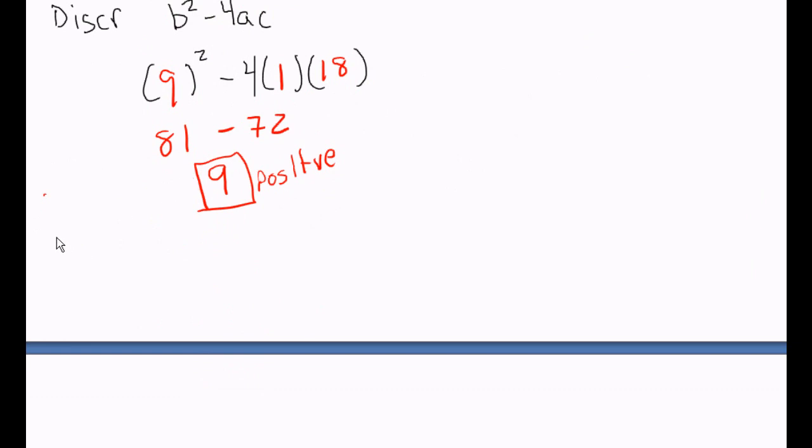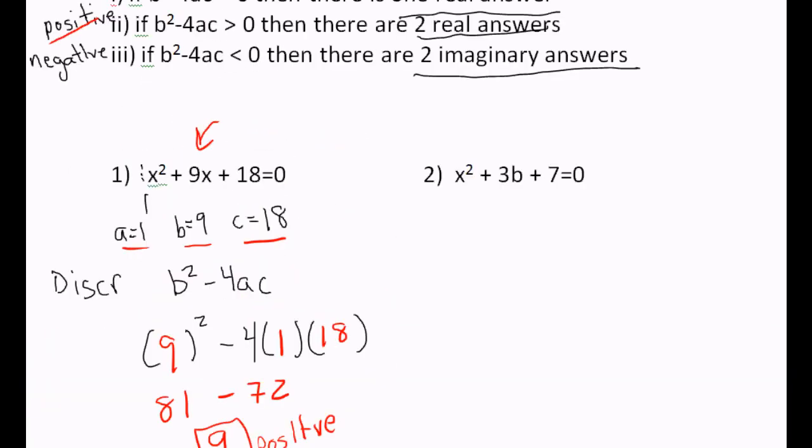So if asked, your discriminant is 9, then you can say there are two real solutions or real answers. Let's try the next problem.